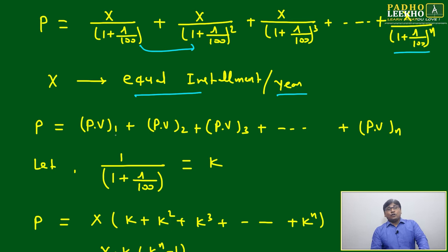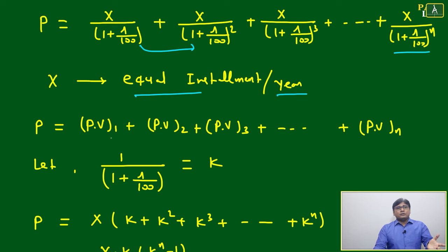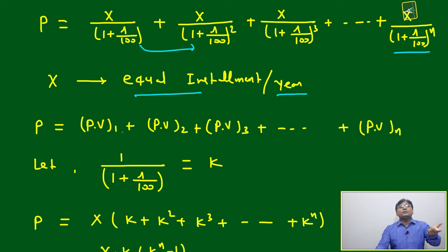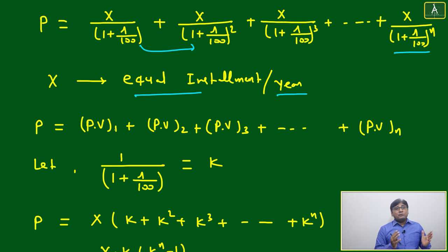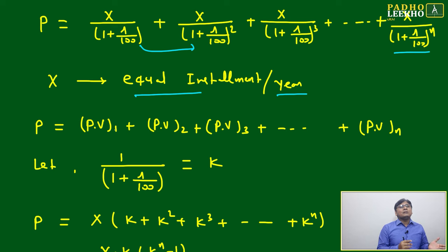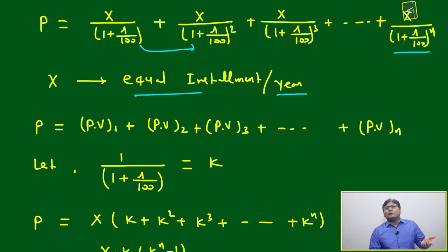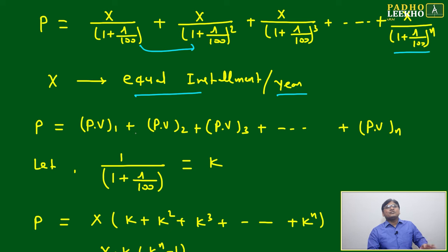Installments can be equal or unequal. If they are not equal, we have to calculate individually. If they are equal, we can apply the formula directly. If we must calculate individually, the number of years will hardly be more than two or three — otherwise it becomes very tedious to calculate.